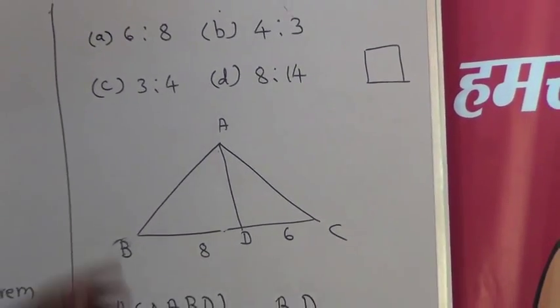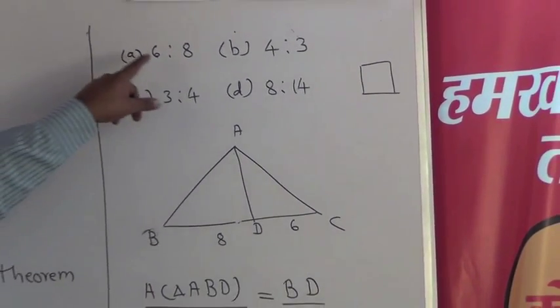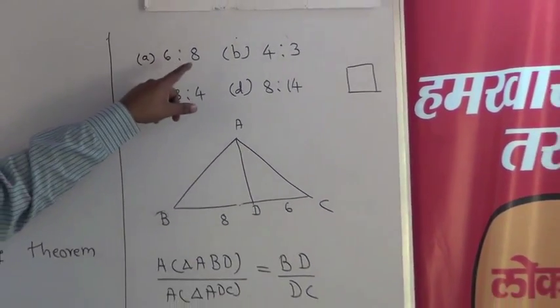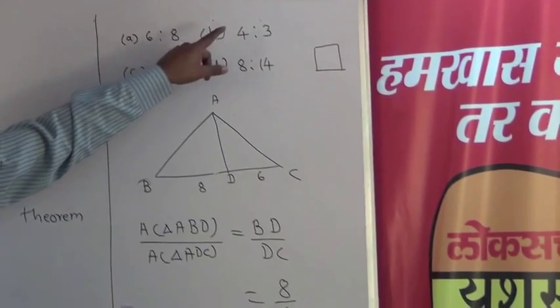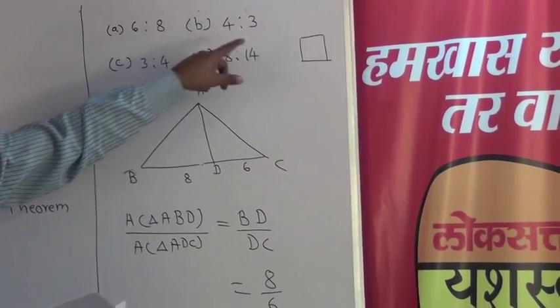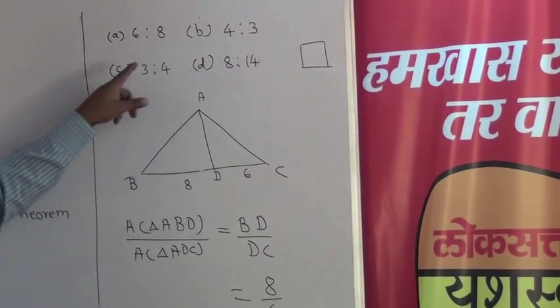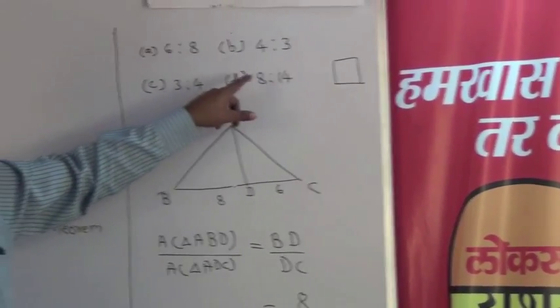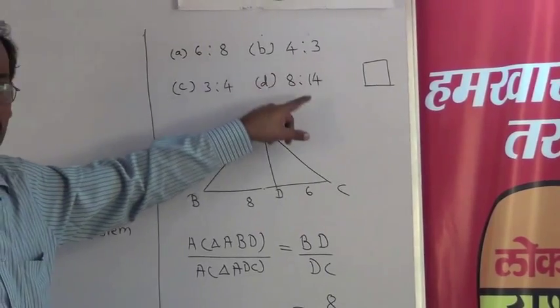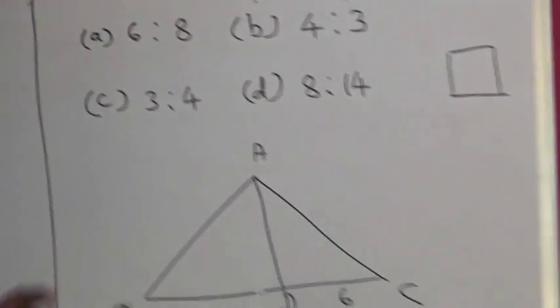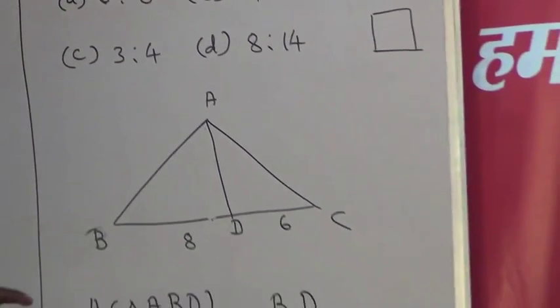The alternatives are: A) 6 is to 8, B) 4 is to 3, C) 3 is to 4, D) 8 is to 15.